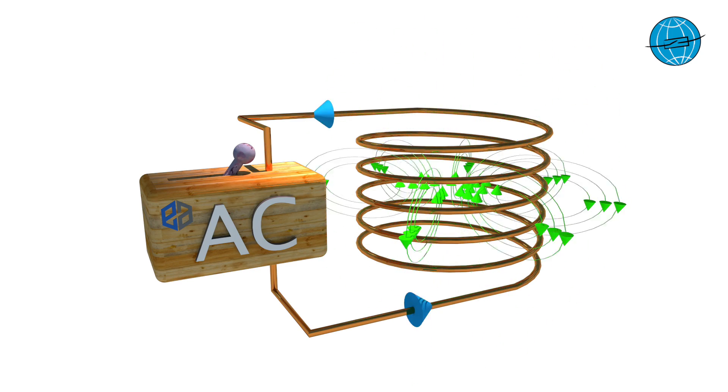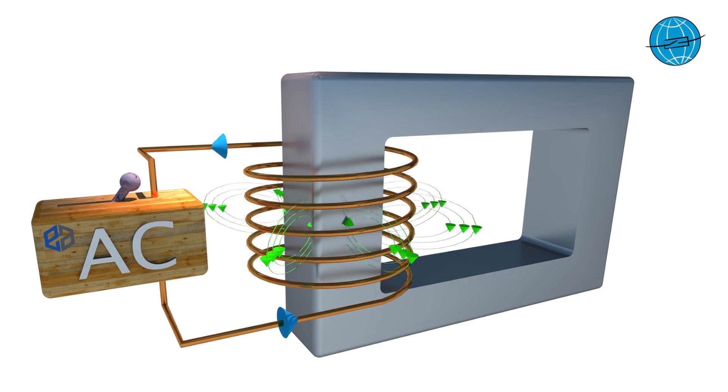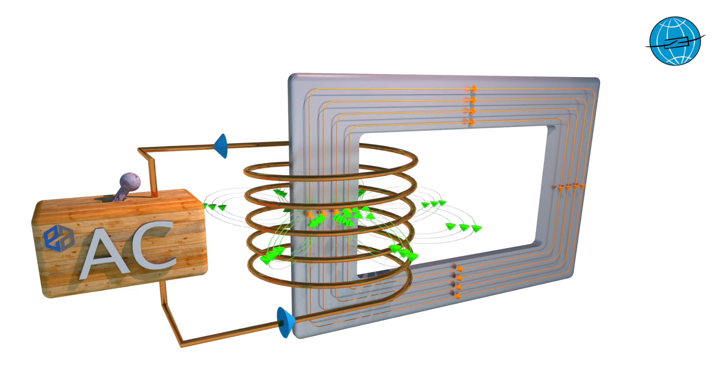As a further elementary component of the current transformer, we now carry a ferromagnetic material, for instance an iron core, through the coil. The magnetic field of the coil is bundled in the iron circle and the magnetic flux V is created as the sum of all magnetic lines.